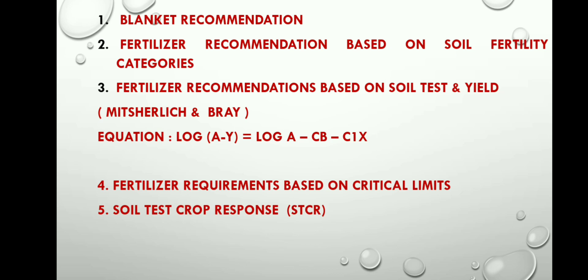The next approach is fertilizer recommendation based on soil fertility categories. Before applying fertilizers, soil testing is done. Soil is collected from a depth of 10 to 30 cm in the field, mostly after three crops have been grown on a piece of land. After three crops, soil is collected from 10 to 30 cm depth and then we check the nutrient content in the soil — checking the nutrient concentration.